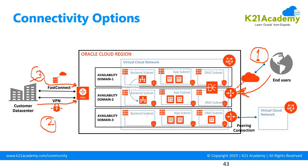This is my Oracle Cloud network in the center. On the right side is where users are coming from the internet, and on the left-hand side is the customer's data center or on-premise, where some users are coming from.